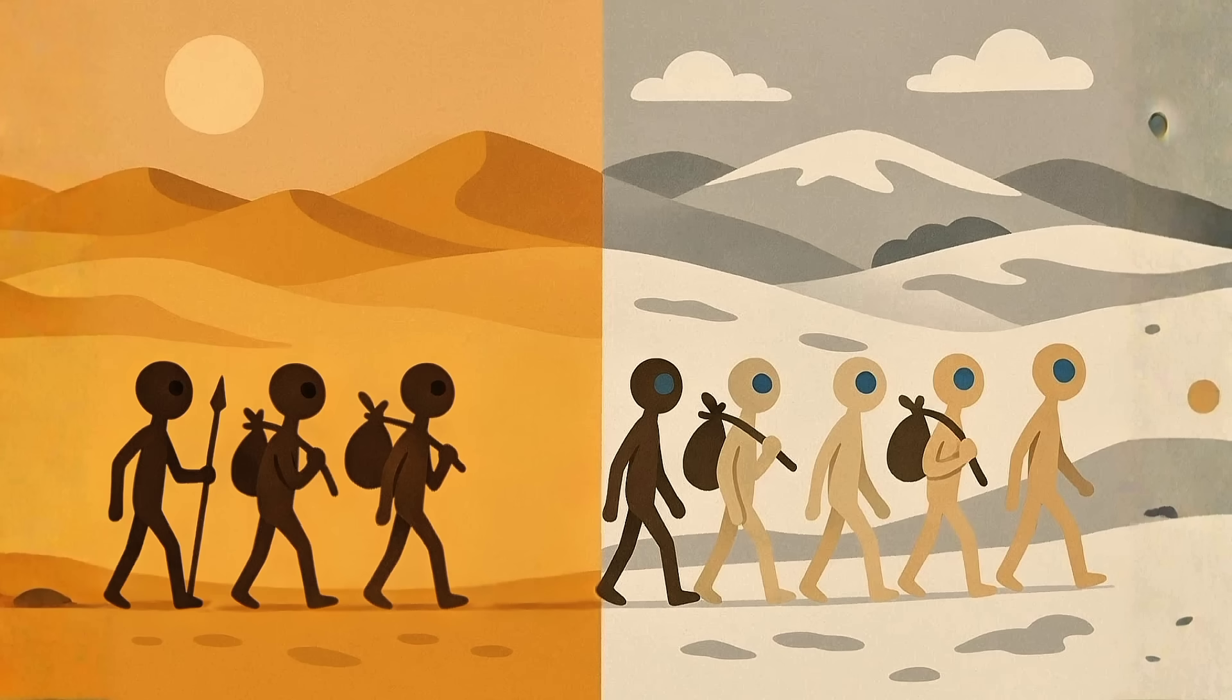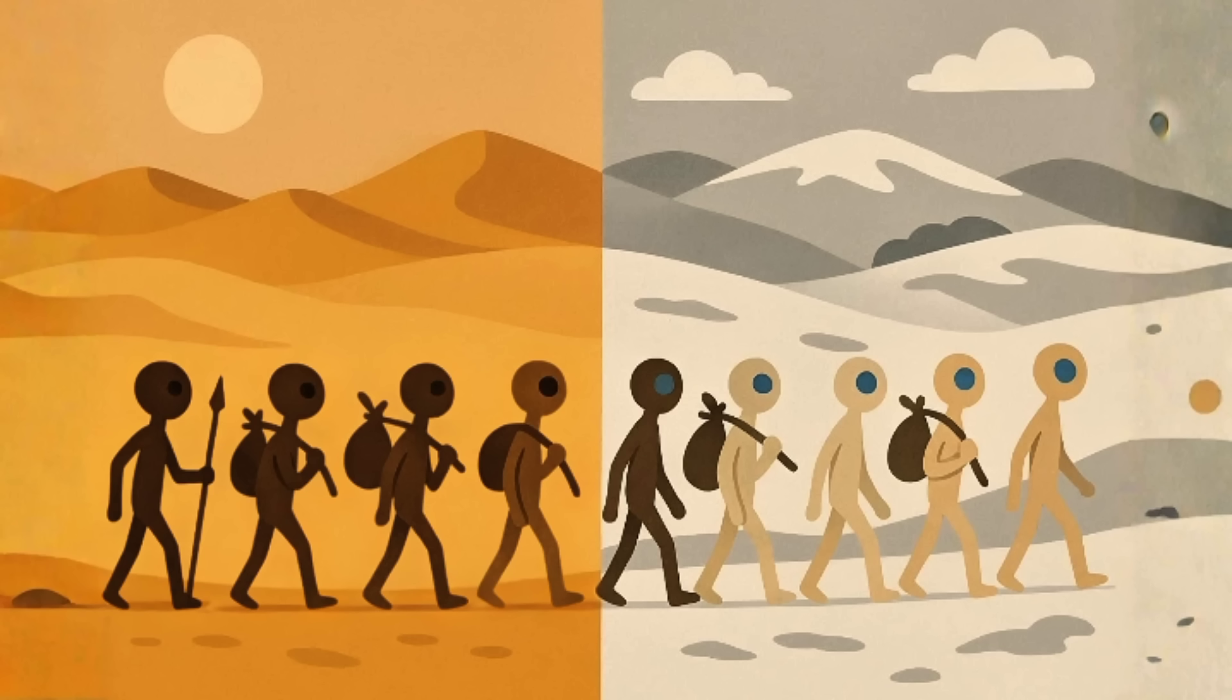Some scientists speculate that, as humans migrated out of Africa into Europe, lighter eye colors like blue appeared because there was less sun, less need for heavy pigment. So, blue equals northern light's bonus.